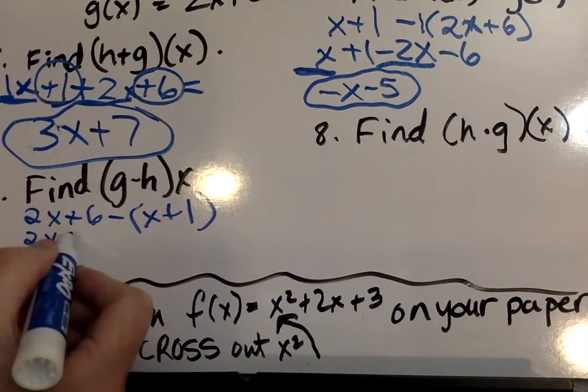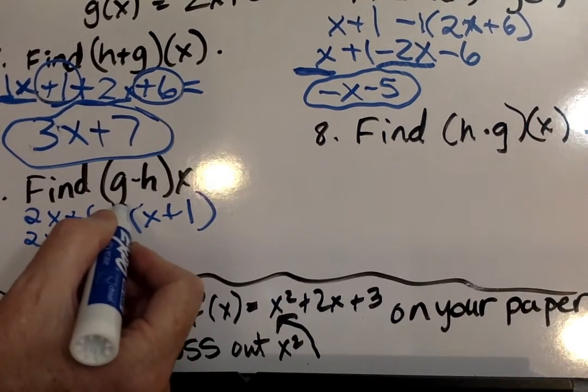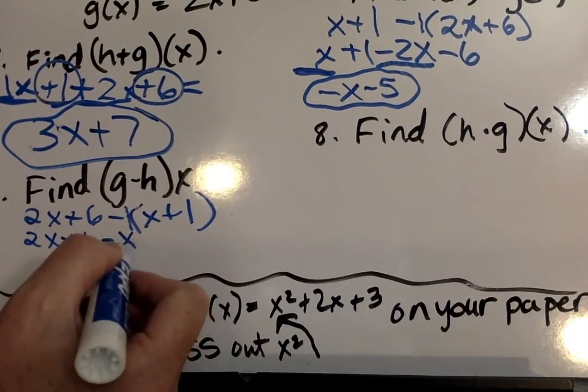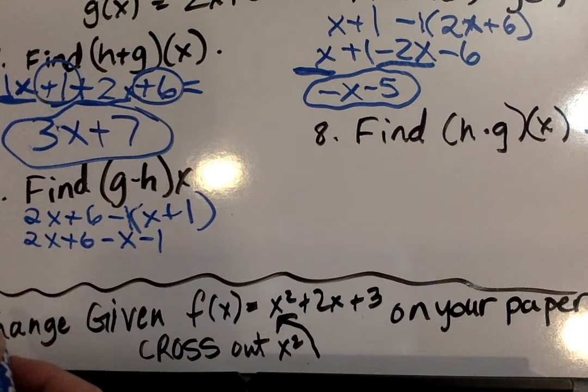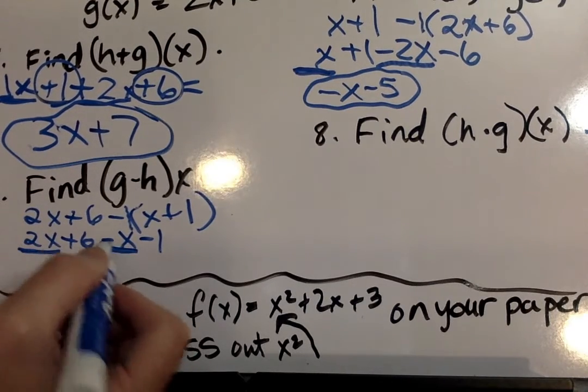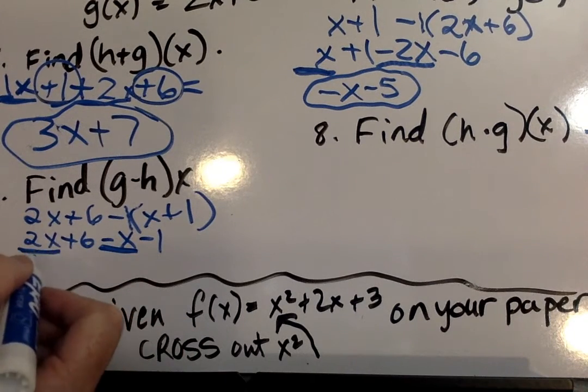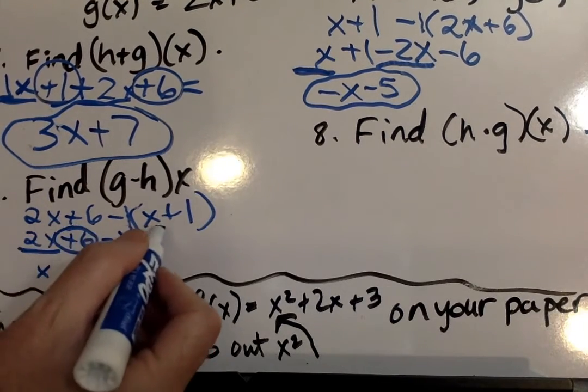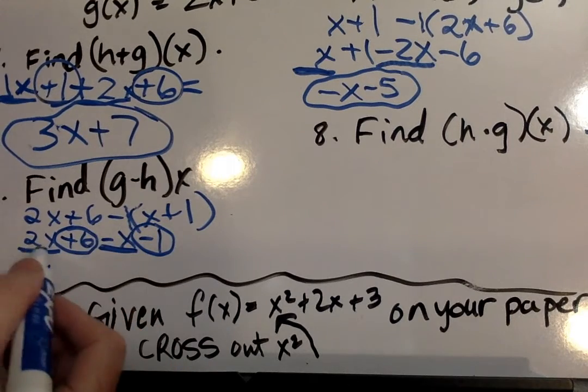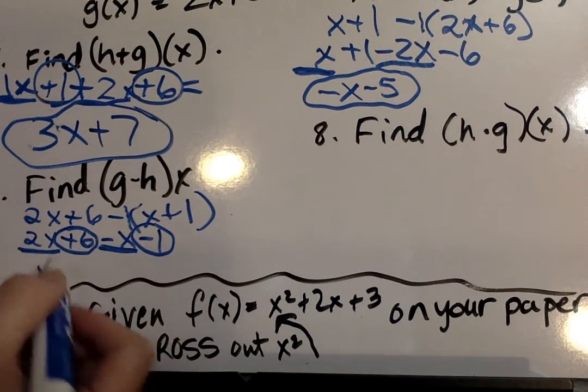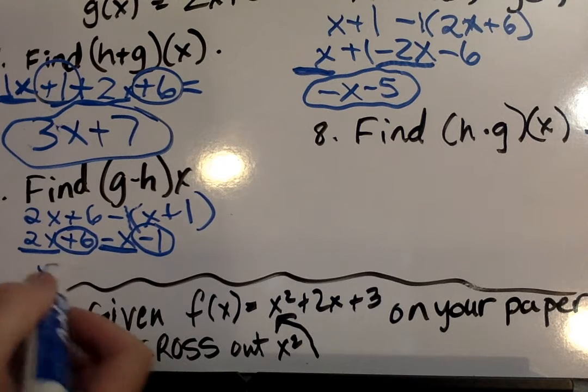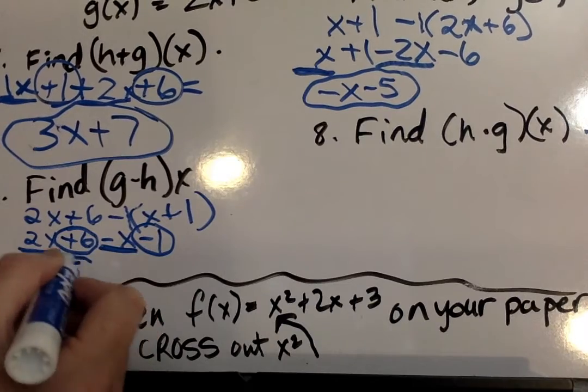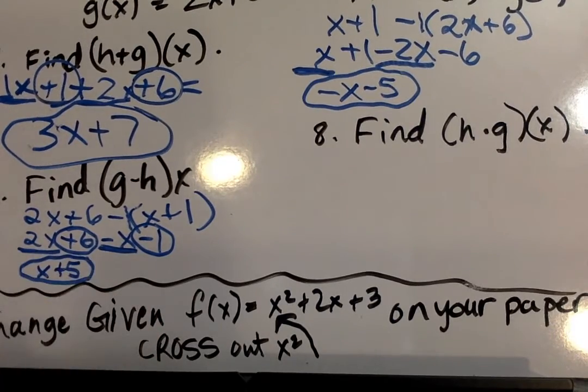So we go 2x plus 6, and again you can put a 1 there. Basically it changes the signs of that, so that will be minus x minus 1. Then we have a 2x and a minus x, and that will give us x, and then a plus 6, and a minus 1. So get in the habit of underlining your x's and circling your regular numbers, so you know what you're combining. And then we just put 6 minus 1 is x plus 5. And you have your answer there.